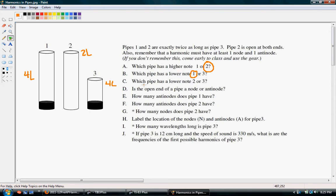Which pipe has a lower note, 2 or 3? Well, since 2 is going to be 2 of these lengths, and 3 is going to be 4 of these, they are actually going to have the same wavelength and therefore the same frequency.